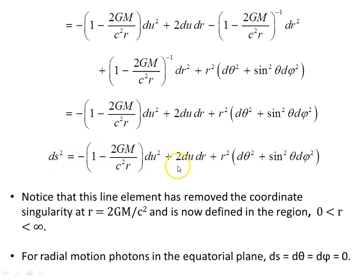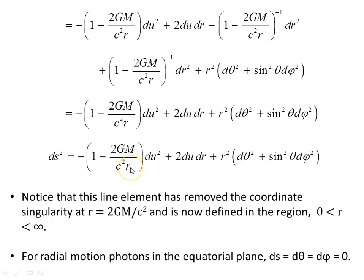This new line element in the variable u has removed the coordinate singularity at the Schwarzschild radius, 2GM/c², and is now defined in the region from just above zero up to infinity. The only singularity this object now has is at r equals zero. The Schwarzschild singularity at r equals 2GM/c² is not a real physical singularity — it is merely the result of the choice of Schwarzschild coordinates; it's only a coordinate singularity.